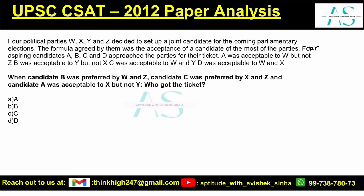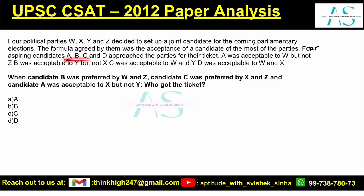Four political parties, W, X, Y, and Z, decided to set up a joint candidate for the coming parliamentary elections. The formula agreed by them was the acceptance of a candidate by the majority of the parties. Four aspiring candidates — A, B, C, and D — approach the parties for their ticket.